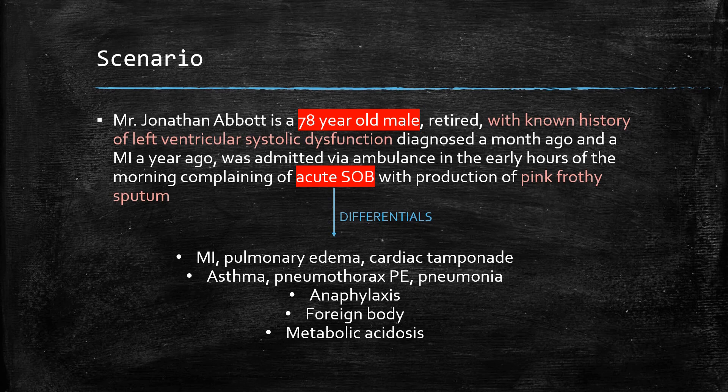Cardiac tamponade results in fluid accumulating in the pericardial space, consequently squeezing the heart and reducing ventricular filling, leading to shortness of breath. Asthma, pneumothorax, pneumonia, PE, and foreign body inhalation all impede lung functioning and can lead to shortness of breath. Metabolic acidosis can trigger Kussmaul breathing, as seen in DKA, where the body attempts to correct the drop in pH.